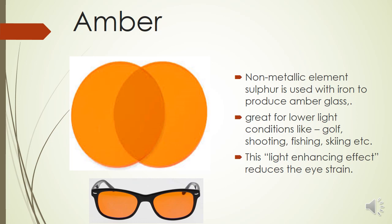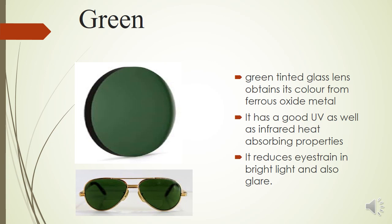The amber tint is produced using the non-metallic element sulfur combined with iron. It is slightly darker than the yellow tint and performs very well in low-light conditions, giving a bright and illuminated vision. It is commonly used in sports like golf, shooting, fishing, and skiing. It has a light-enhancing effect and reduces eye strain by cutting glare from shorter wavelengths and UV light.